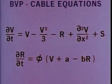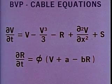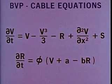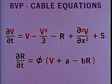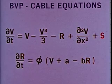These are the theoretical equations which were solved with a computer to make this motion picture. V is the membrane potential. R is the recovery variable. S is the stimulating current.